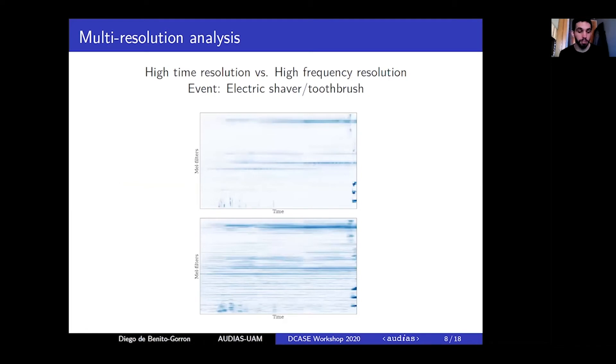To explain the convenience of multi-resolution, two examples are given. These are two MEL spectrograms extracted at two different resolution points from the same recording of an electric shaver. The audio segment presents some frequential components that remain constant in time. This is much better represented in the bottom MEL spectrogram which offers a higher frequency resolution.